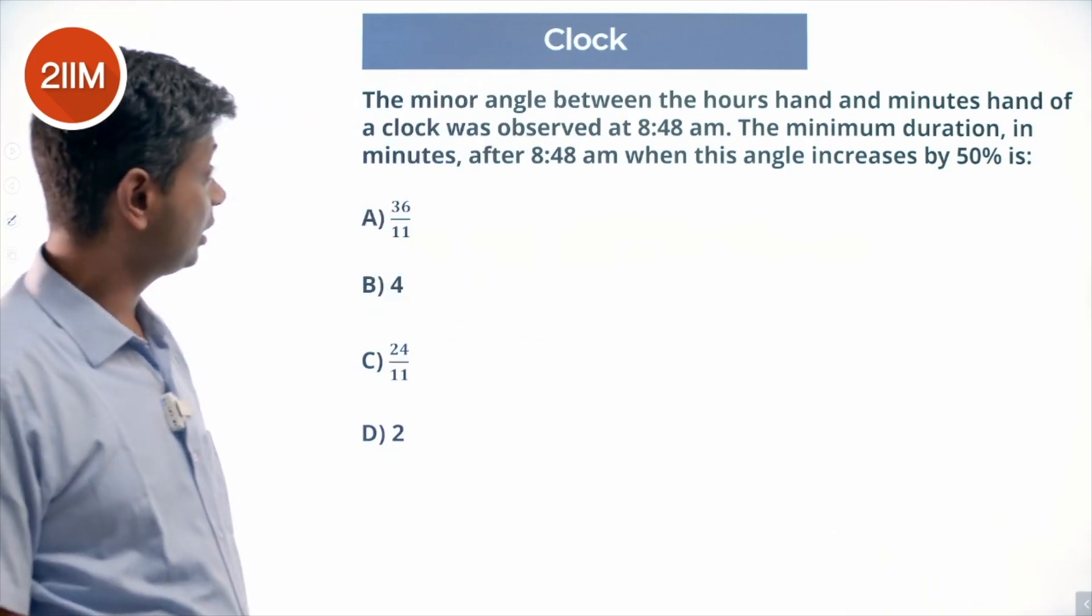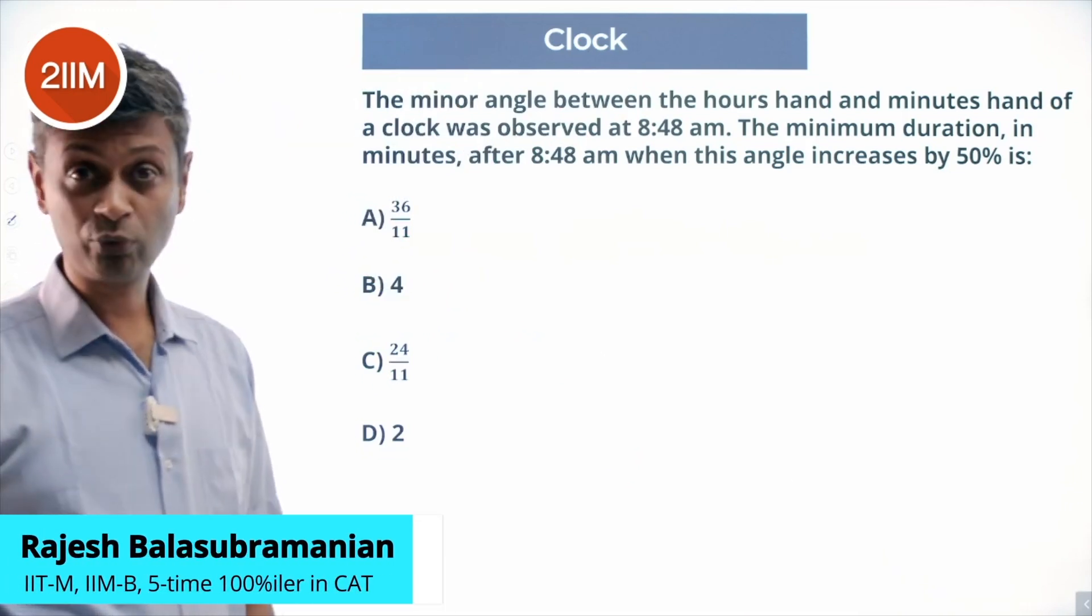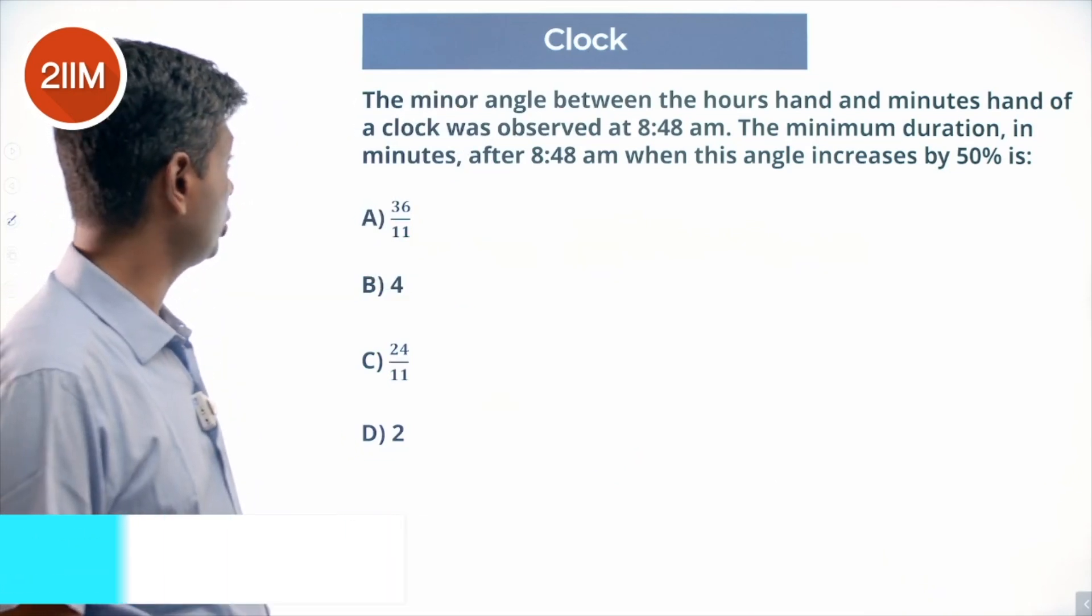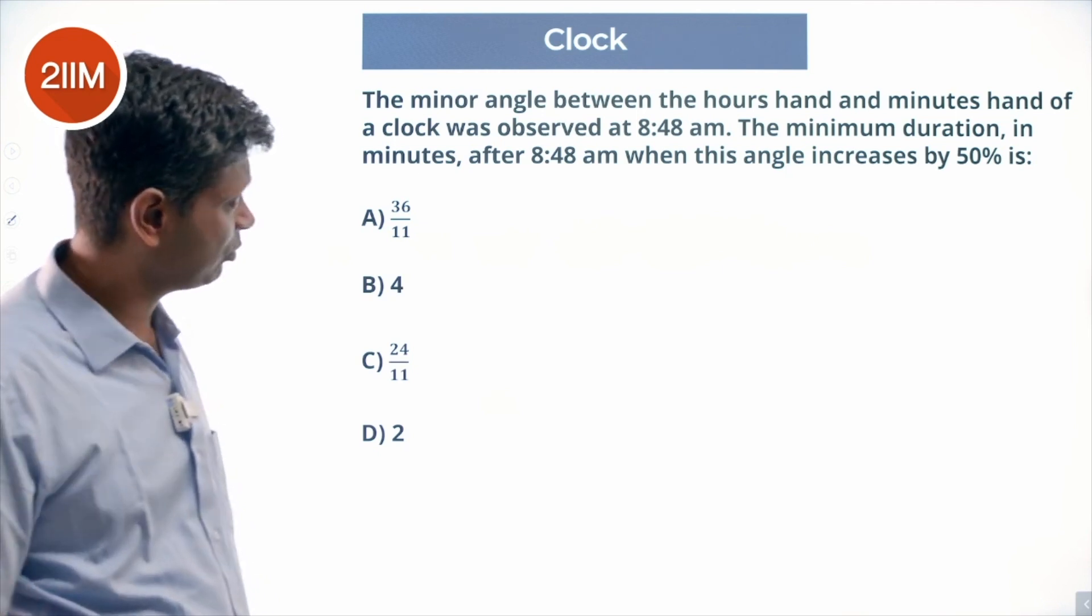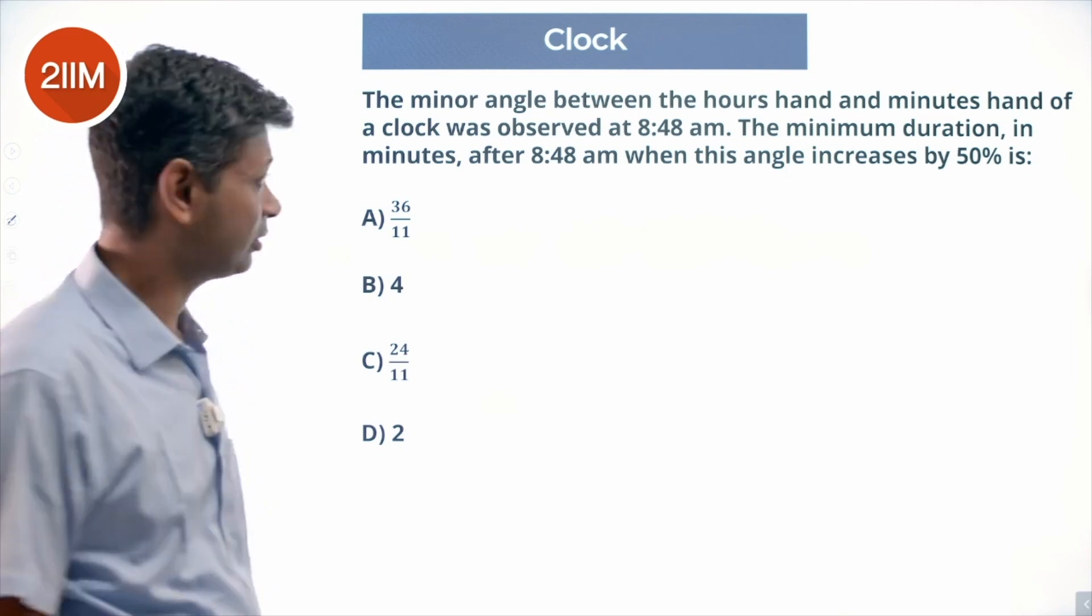Find the angle between the hour hand and the minute hand of a clock observed at 8:48 AM. The minimum duration in minutes after 8:48 AM when the angle increases by 50 percent.